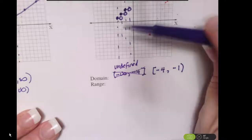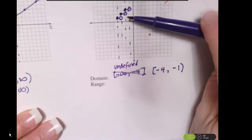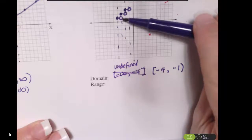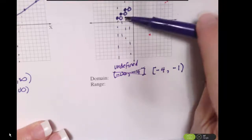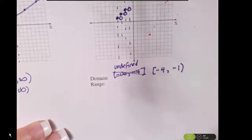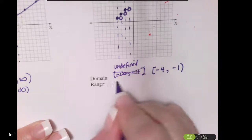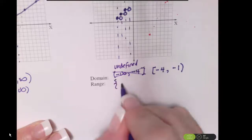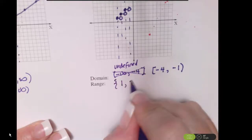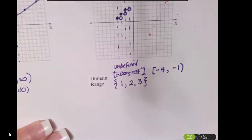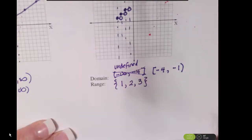My range — I've got some distinct ranges here. I don't want to say between 1 and 3 because it's only defined right on the integers. So my range is actually a list of values — it's defined at 1, 2, and 3. Interval notation would not be appropriate here.